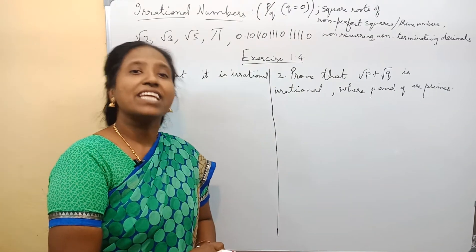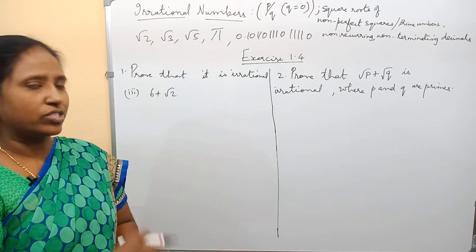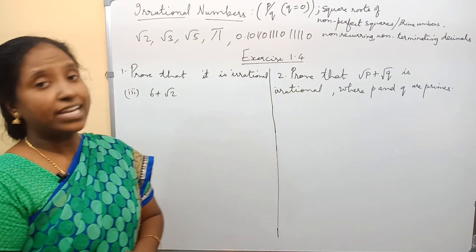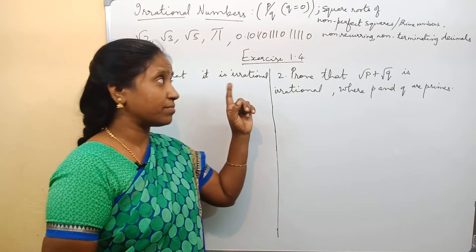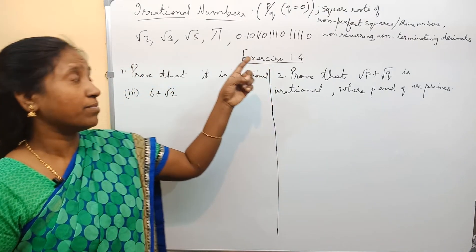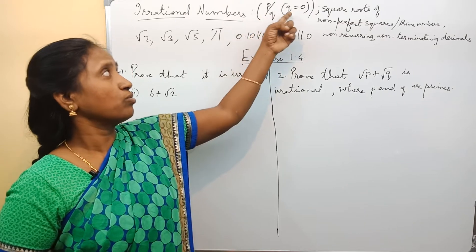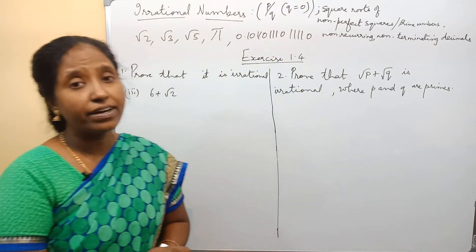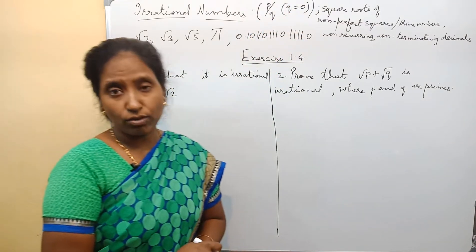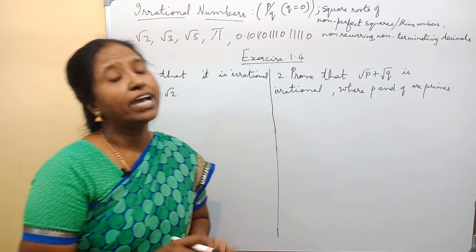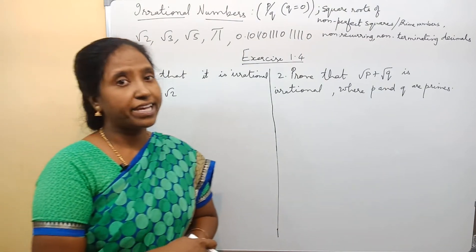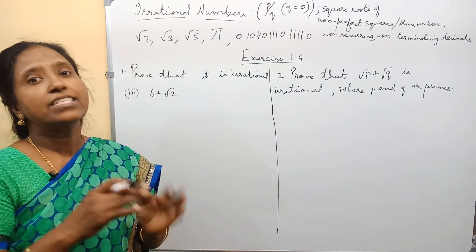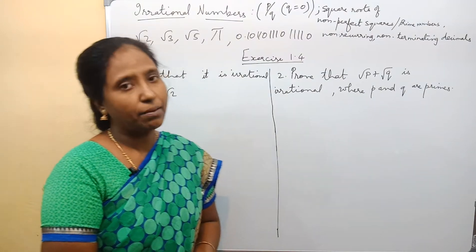Irrational means illogical — they are not logical. Irrational numbers are such numbers where P by Q, Q is equal to 0. Whenever the denominator is equal to 0, the answer is undefined — we cannot find the answer. Such numbers are irrational numbers.